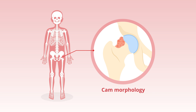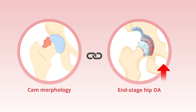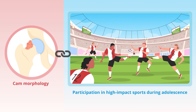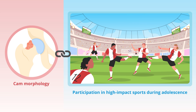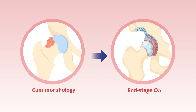Cam morphology develops during skeletal growth and is linked to an increased risk of end-stage hip osteoarthritis, or OA, in individuals aged 45 years and above. While cam morphology is associated with participation in high-impact sports during adolescence, its progression to end-stage OA has not been specifically documented in athletes.